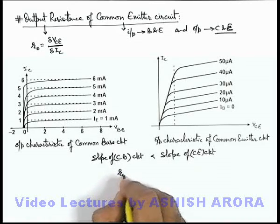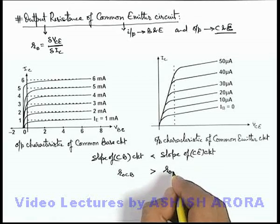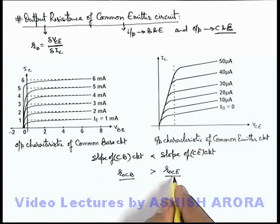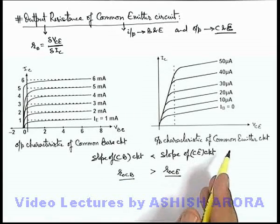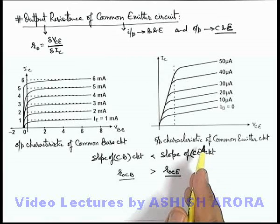So here we can say that output resistance for common base circuit is more than the output resistance of the common emitter circuit. Always remember this, because the slope in common emitter configuration output characteristic is more.